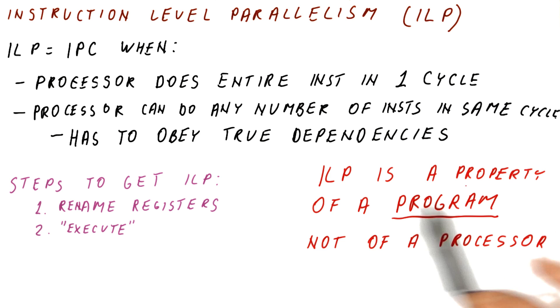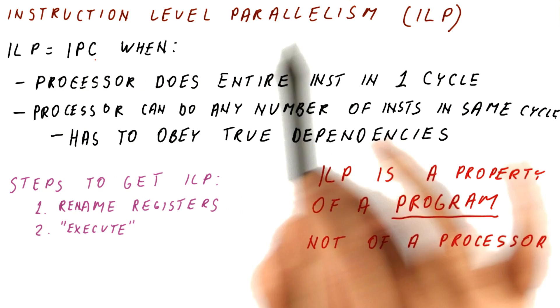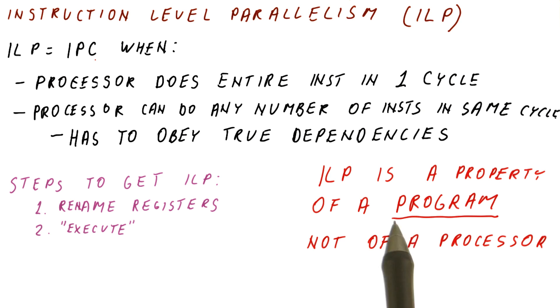So just remember that when you're asked to produce the ILP, you should just consider the program. It doesn't matter what the processor looks like because the ILP is computed for a perfect processor anyway. In contrast, you could say that the IPC of this program on a given processor is something else, but be mindful of this. Basically, the ILP, you only need to see the program. You don't really need to know what the processor looks like.